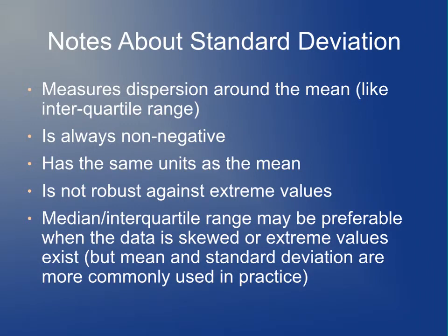A few things to keep in mind about standard deviation: it measures dispersion around the mean, like the interquartile range. It's always non-negative, it has the same units as the mean. Once again, it's not robust against extreme values. You have a few outliers—just like a few outliers can make the mean much larger, a few outliers can make the standard deviation much larger as well. You may prefer to use median or interquartile range when the data is badly skewed or you have a few extreme values, but in practice, mean and standard deviation are much more commonly used.